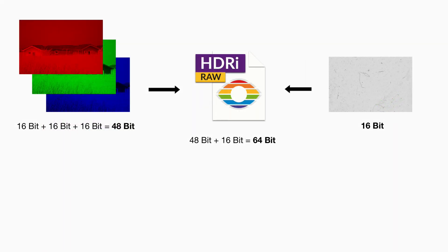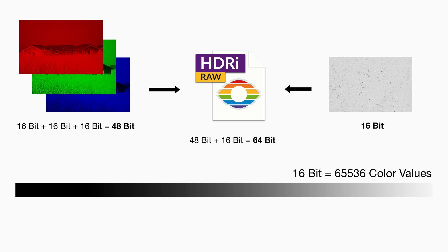An HDRI RAW file contains RGB image data as well as an infrared image. Each color channel holds an uncompressed image with 16-bit color depth. This is a very important prerequisite for Silverfast's lossless archive workflow. 16-bit stands for more than 65,000 color values per channel. In contrast, 8-bit color depth differentiates only 256 color values.